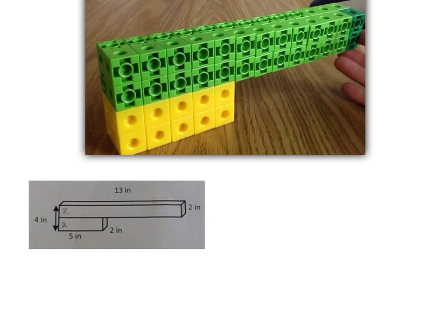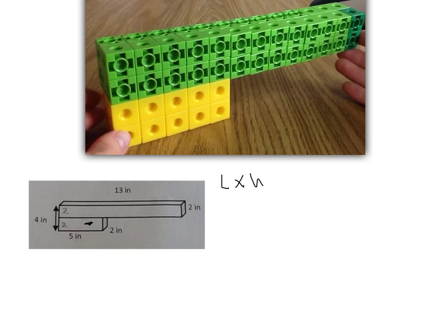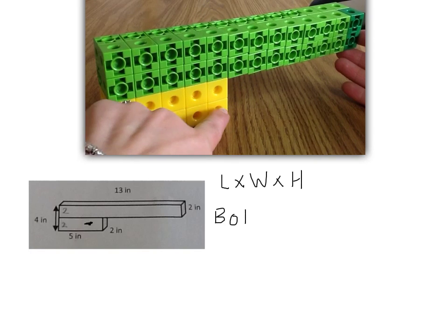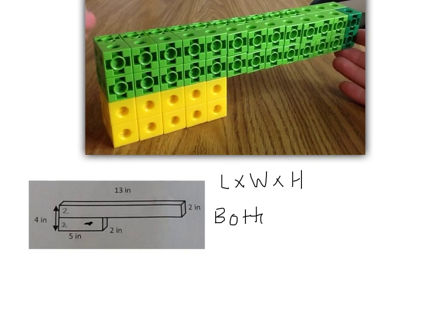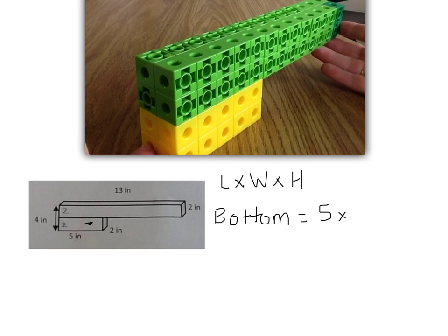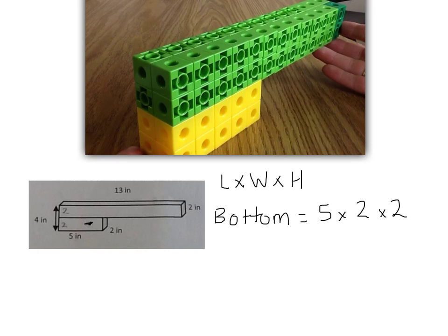I'm going to start with my bottom prism, my prism that's in yellow. I know that for volume I have to multiply length times width times height. If I were to count the length, I see that I have 5. The width, going back, I have 2. And the height for the yellow is 2. So I would multiply 5 times 2 times 2.